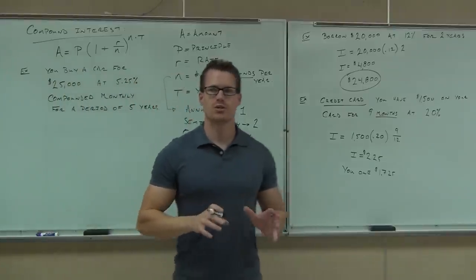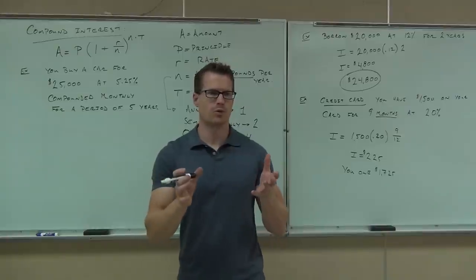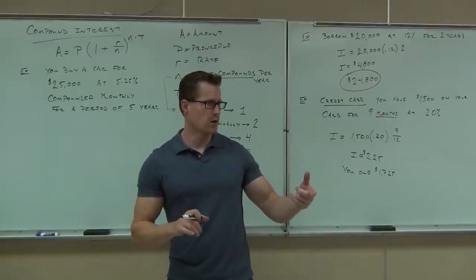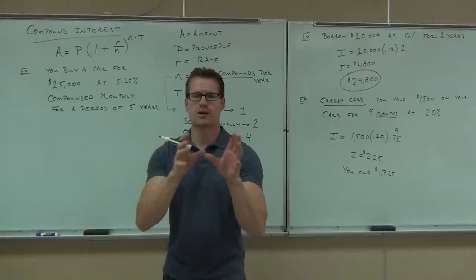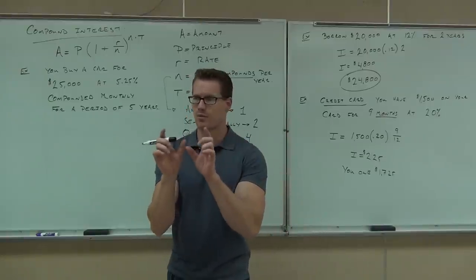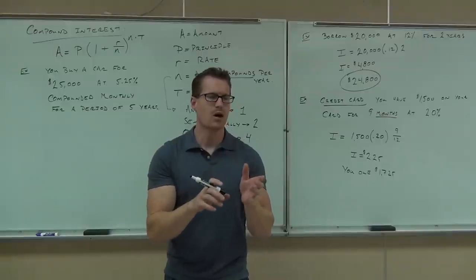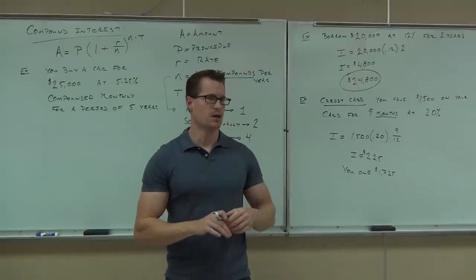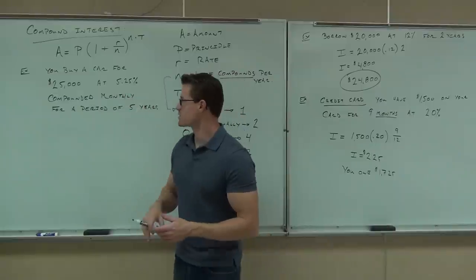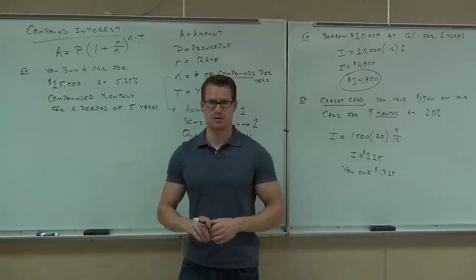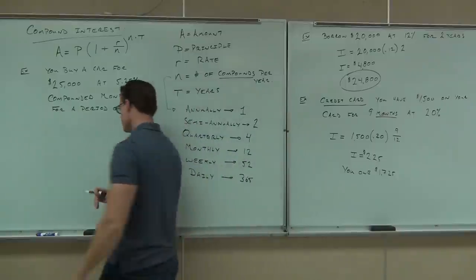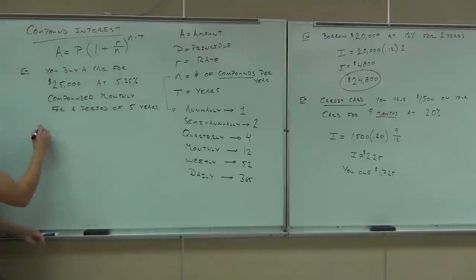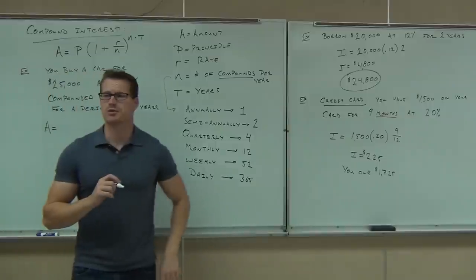We'll do what's called a balloon payment with no payments ahead of time. Unlike a normal car company that makes you pay every single month — where they recalculate the proportion going to principal vs. interest each month — we're going to simplify and find how much overall you'd owe at the end with no payments until the end. So at the end of five years, come in and pay all the money. We're not paying by the month.